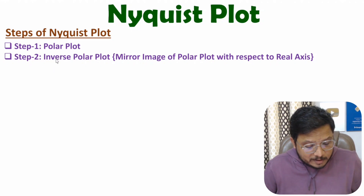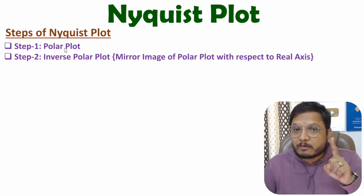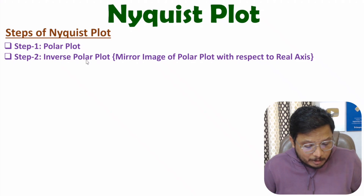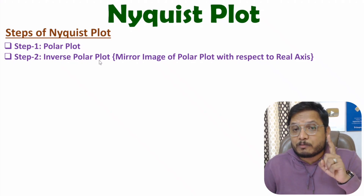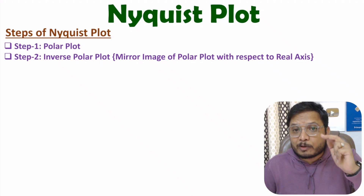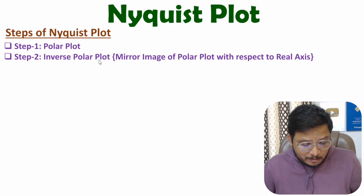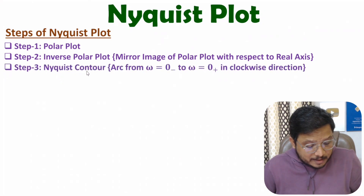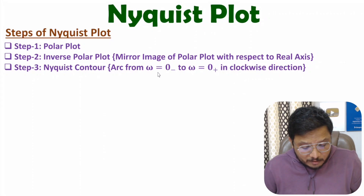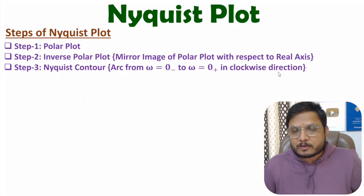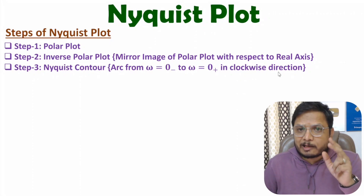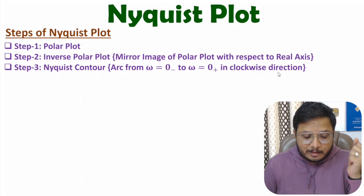In the polar plot we substitute s equals j omega. In the inverse polar plot we have s equals minus j omega, which is the exact mirror image of the polar plot with respect to the real axis. In the third step we need to have the Nyquist contour, which is an arc from omega equals minus zero to omega equals plus zero in the clockwise direction.